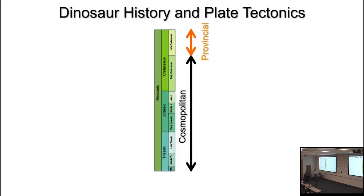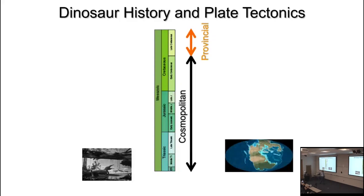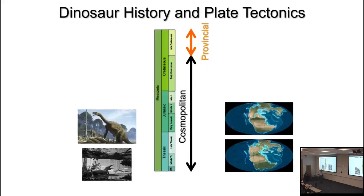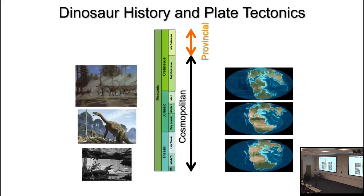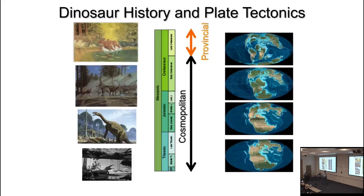On the broadest level, dinosaurian history is largely cosmopolitan in its first section and then becomes much more provincial in the late Cretaceous. In the late Triassic, the world is joined in Pangea and not surprisingly has very similar faunas from region to region. Moving up to the early Jurassic, it's still pretty similar whether we're in China, Arizona, or Argentina. Even in the late Jurassic and early Cretaceous, there's still a lot of similarity across different parts of the world. But when we get to the late Cretaceous, it's highly provincialized.